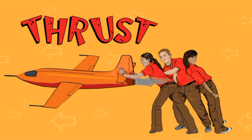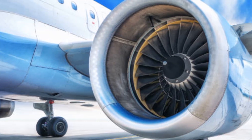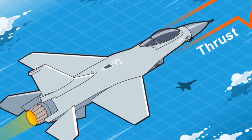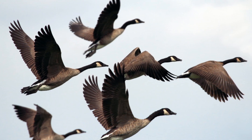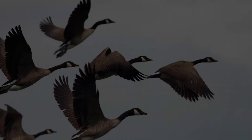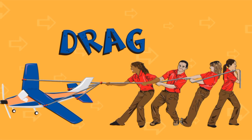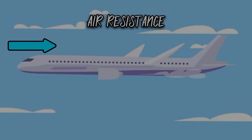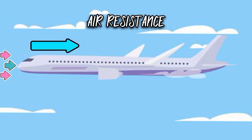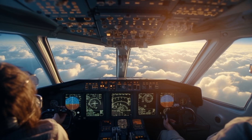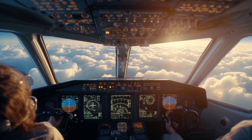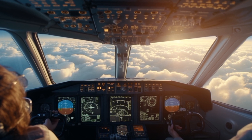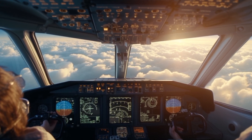Thrust: engines produce thrust — it's the push that moves planes forward. Birds flap their wings to get thrust. Drag is air resistance; it tries to slow things down. Think of it as air's way of saying, 'Hey, slow down.' For planes, it's a force to fight against.